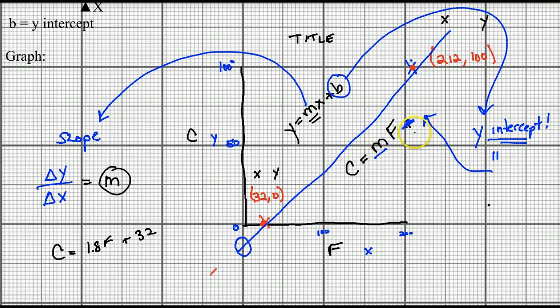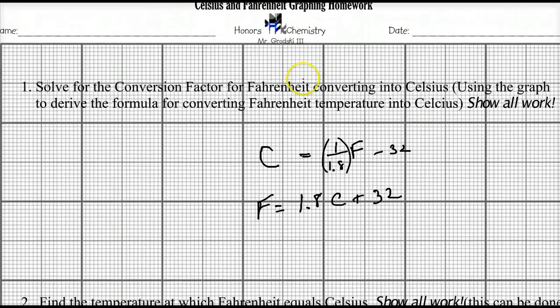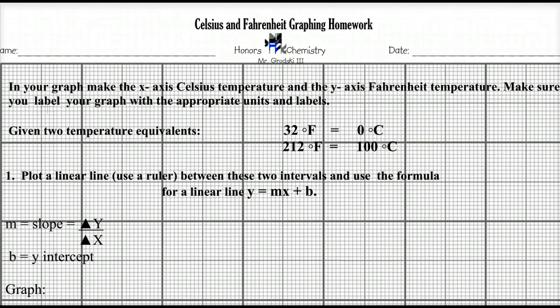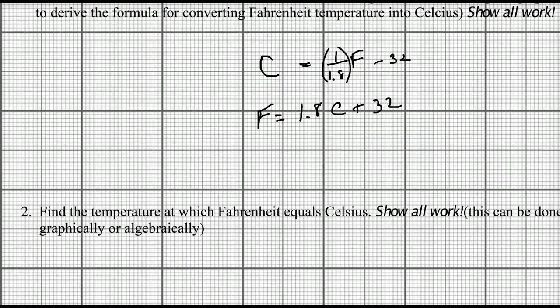So once you have this value and this value, you have the equation of converting a Fahrenheit into Celsius. And, of course, that is what question one is about. So question one is about finding out these formulas that way. So, using your y equals mx plus b, you can solve for that equation.